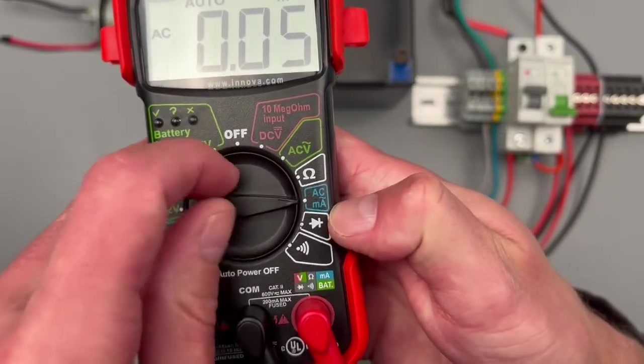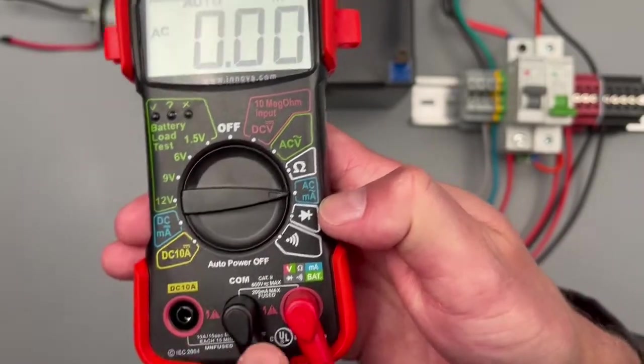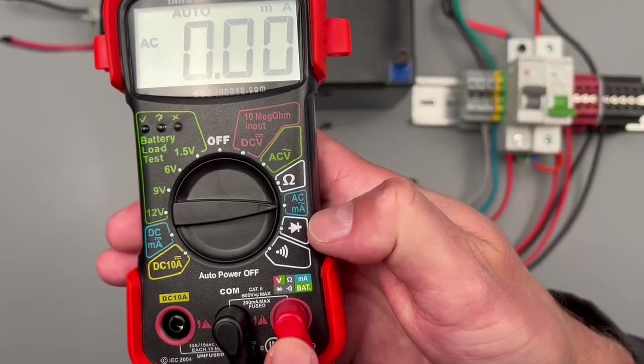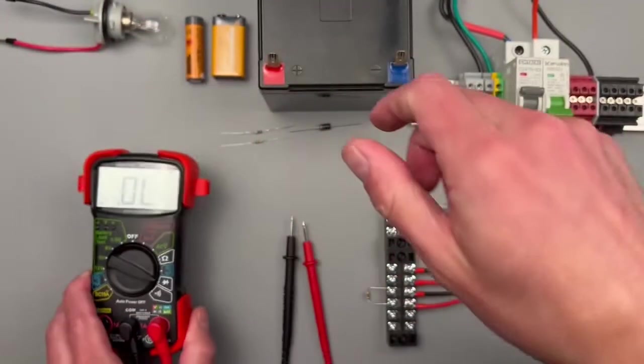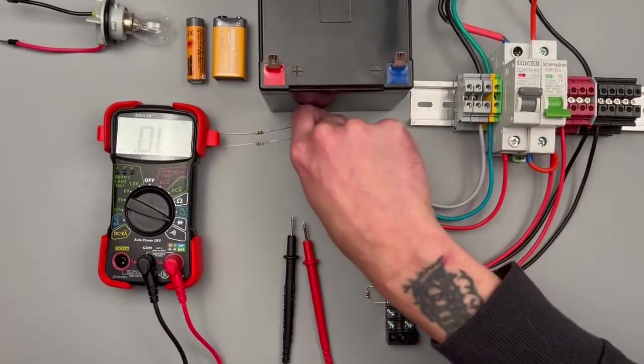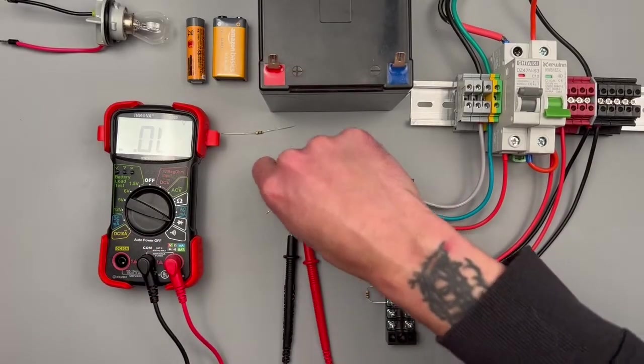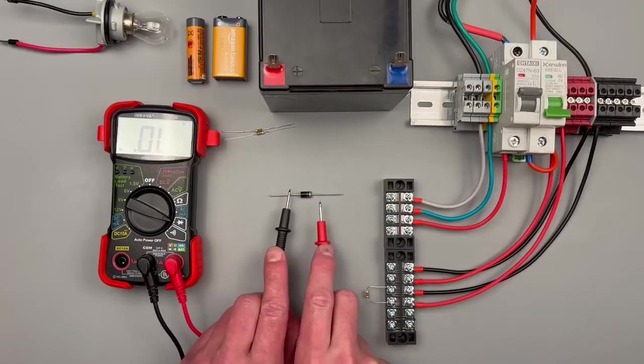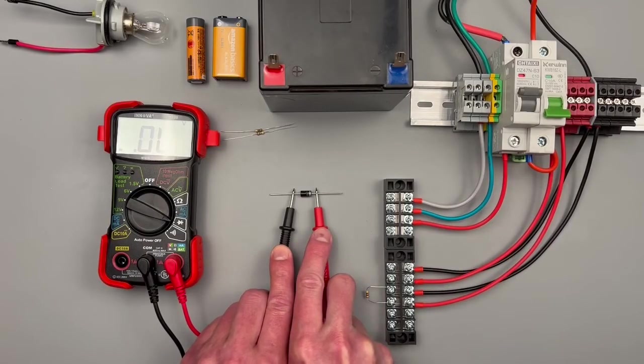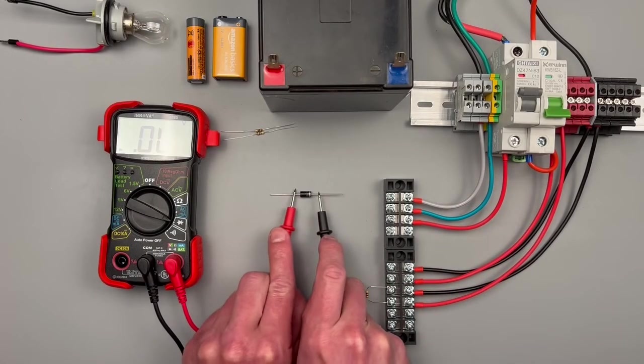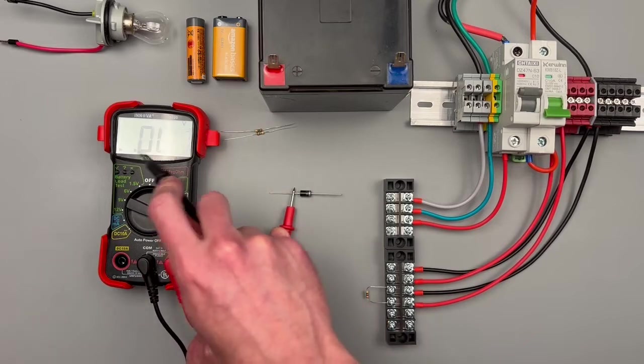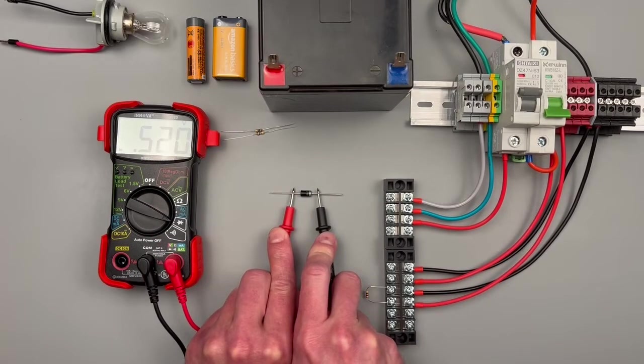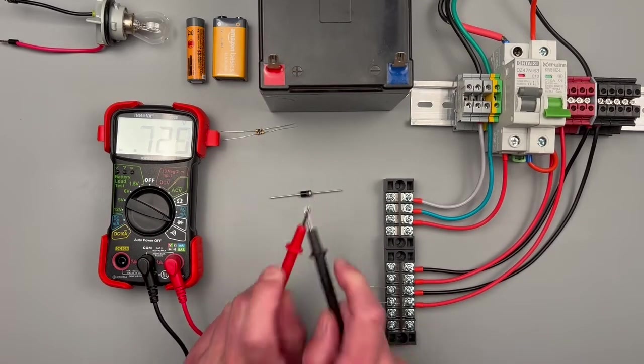Next is your alternating current milliamp setting, which you can leave your ports both in there for that. This will be your diode setting. With diodes, you're going to want to measure them in both directions, and your measurement is going to be the voltage drop in millivolts. It does have a decimal there letting you know it's in millivolts - 500 millivolt voltage drop, that checks and tracks.